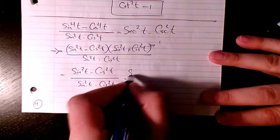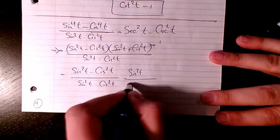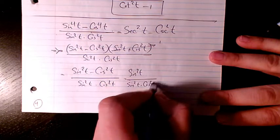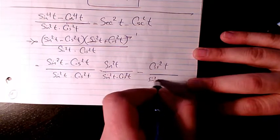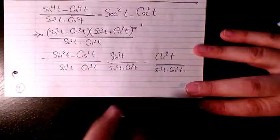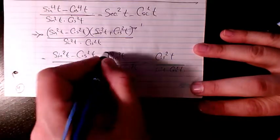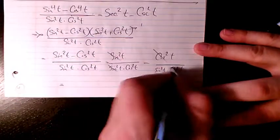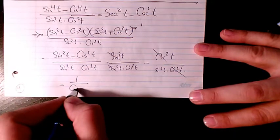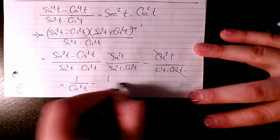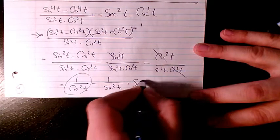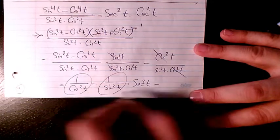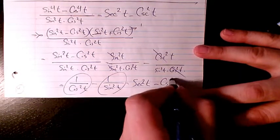I separate them. It's going to be sine squared t divided by sine squared t cosine squared t, minus cosine squared t divided by sine squared t cosine squared t. Now you can see this one and this one cancel out, and this one and this one cancel out. So my answer will be 1 over cosine squared t minus 1 over sine squared t, which is secant squared t minus cosecant squared t.